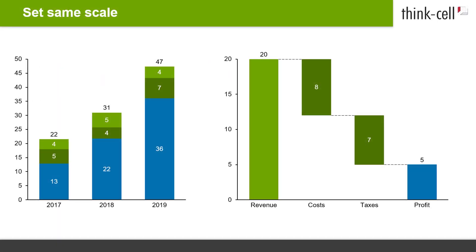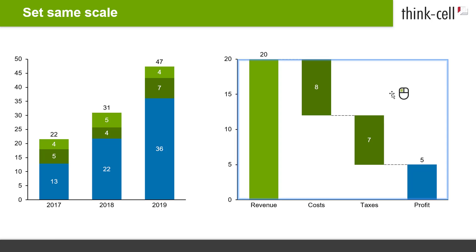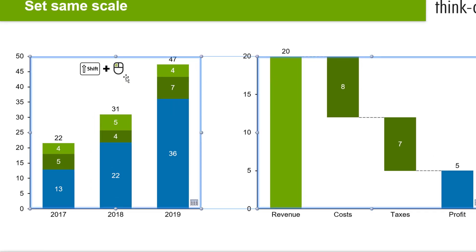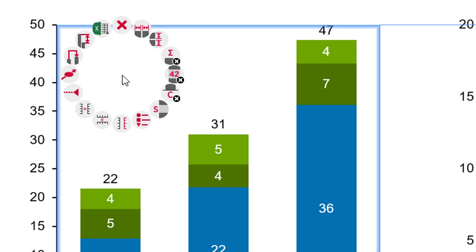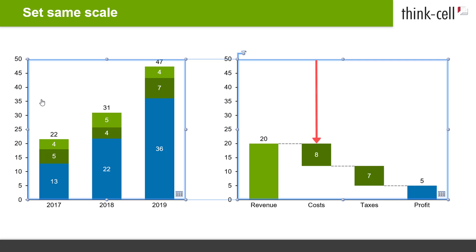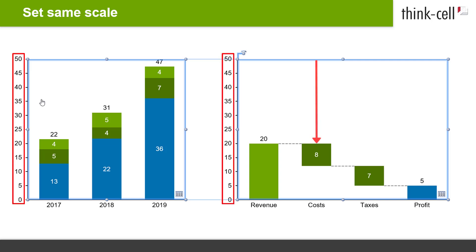Let's say you have two similar charts on the same slide and you would like them to share the same scale for the Y-axis. In this case, both charts have the same height, although the waterfall chart on the right represents only 20 units, whereas the stacked chart on the left represents 47 units. To make two or more charts visually comparable, first multi-select the charts by holding Shift and clicking on them, then right-click into the selection and pick Set Same Scale from the context menu. The scale of the chart with the smaller values is resized to match the larger one.